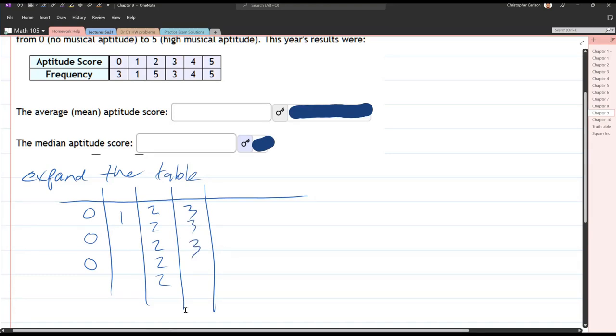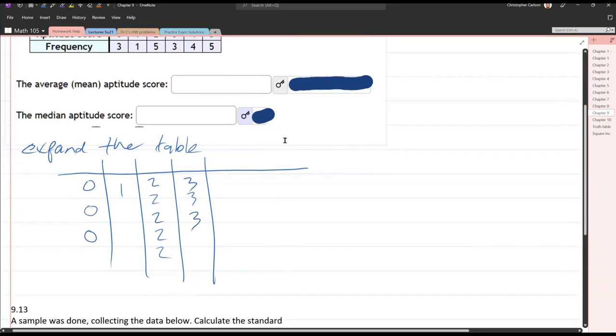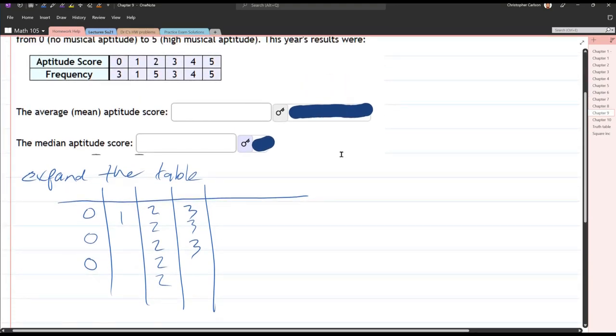Do not do this method if your table has really high frequencies, like 15 or 20. You can do the second part, which is what I'll get into, if you have larger frequencies. So 4 fours and 5 fives.